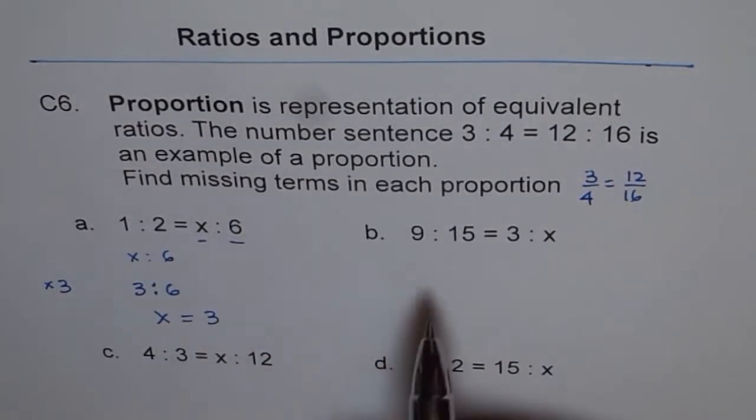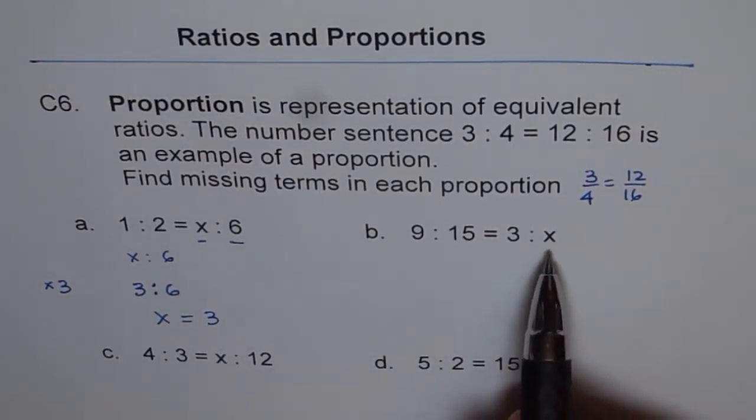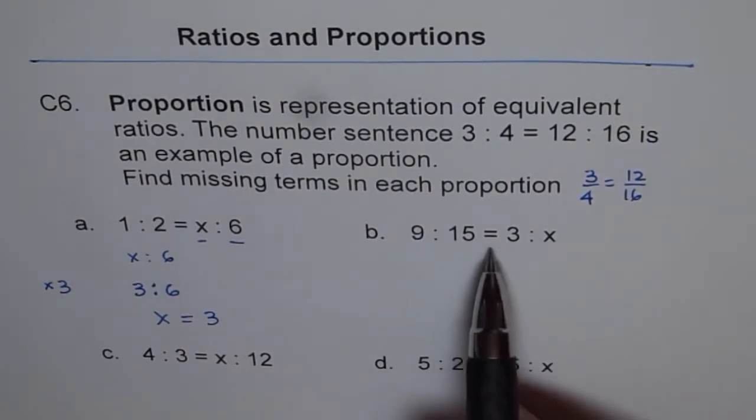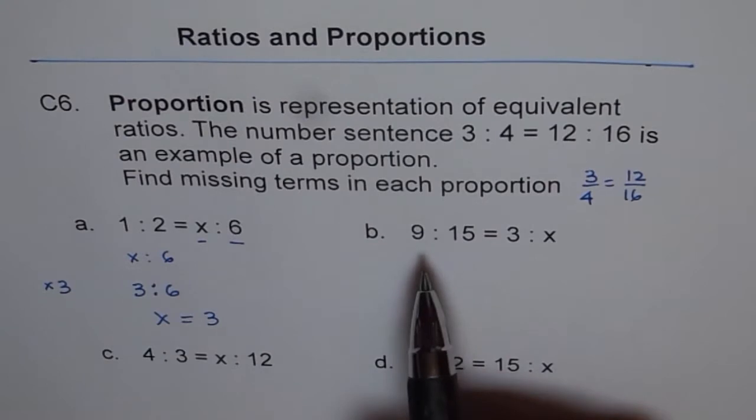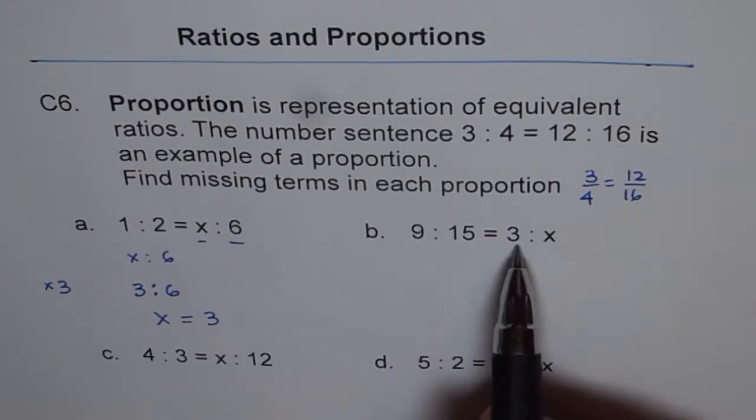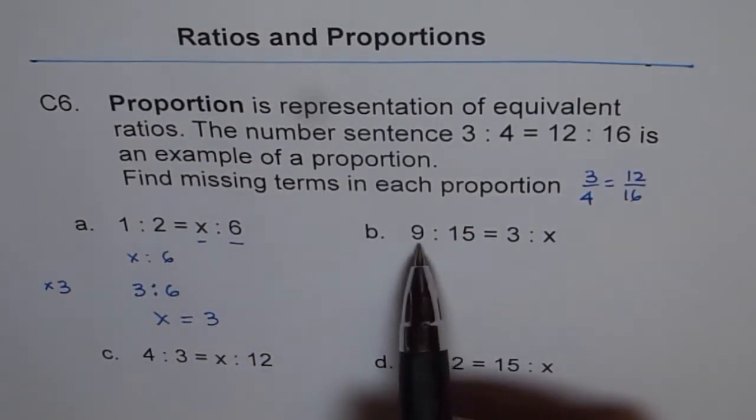Let me do one more question and show you once again how to get the missing term from a proportion statement. This is kind of a number statement with equal to sign. So the question is 9 is to 15 equals to 3 is to x. Now think like this. How can I get 3 from 9?